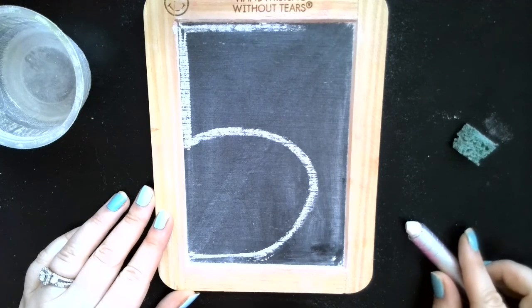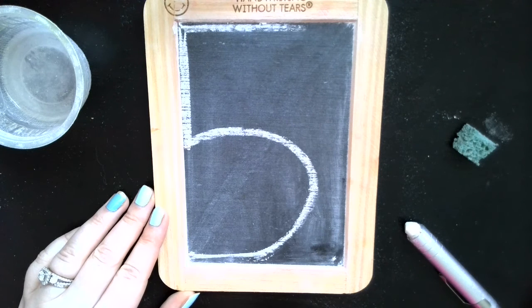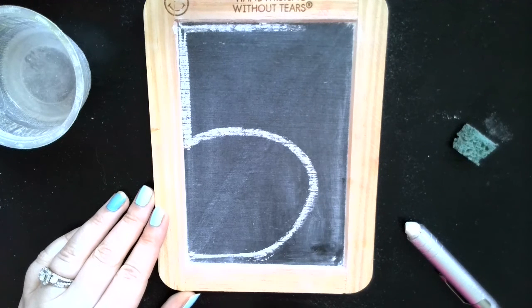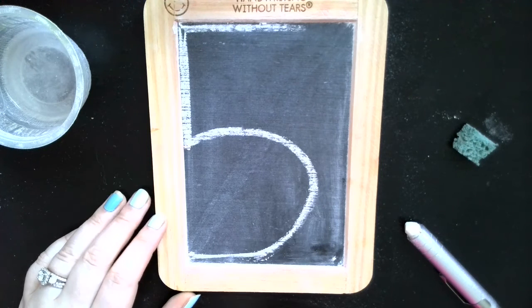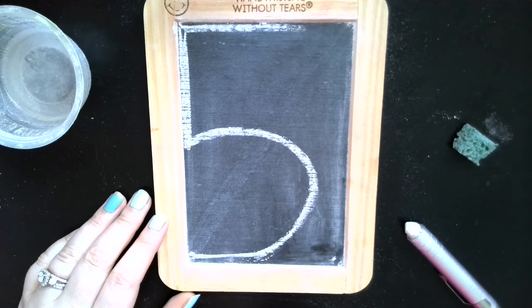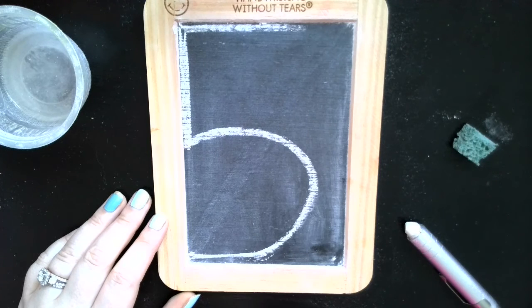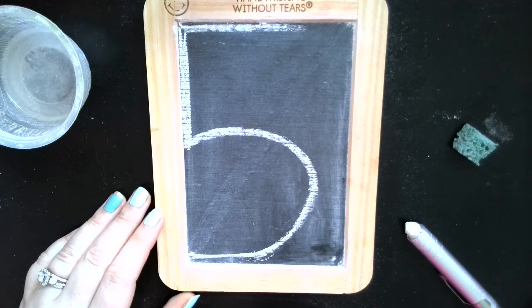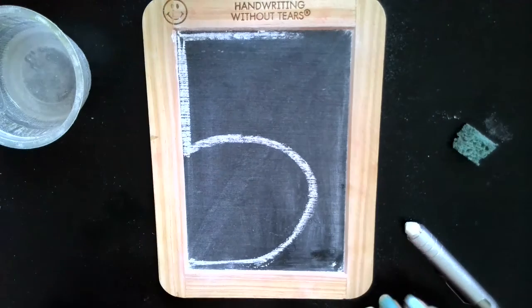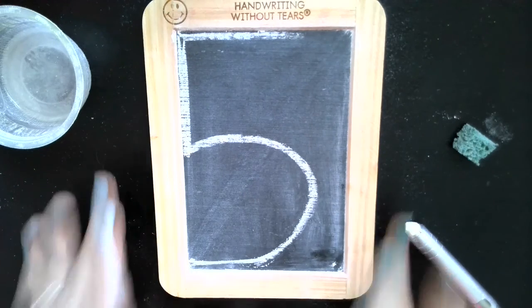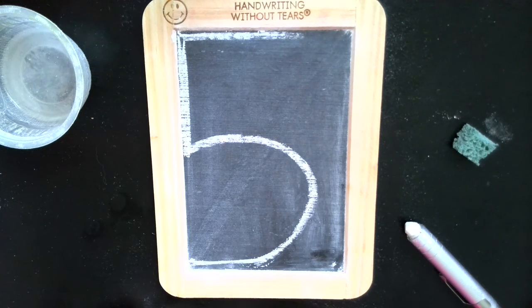That's our numbers one to five using our handwriting without tears chalkboards. You can also practice this in your handwriting without tears book and with the pieces that you cut out in our handwriting without tears letter book. Have fun, practice your letters, and let's practice writing them so they're not backwards. We'll use the happy face and the area that we have here to make sure our numbers are not backwards.